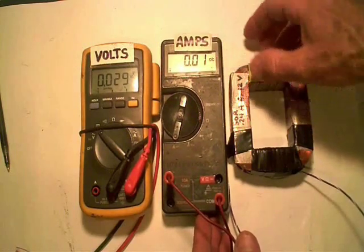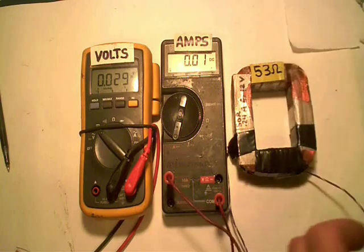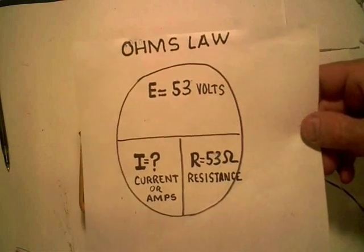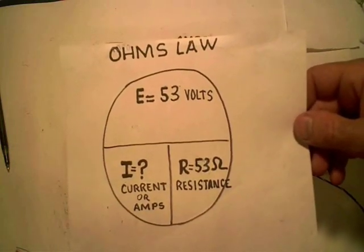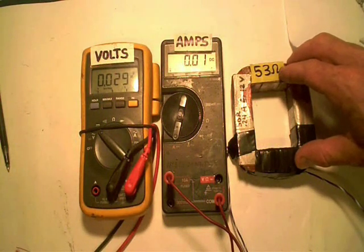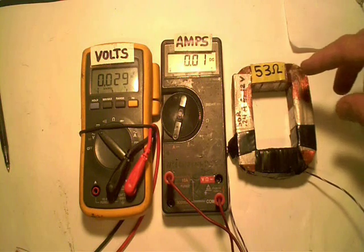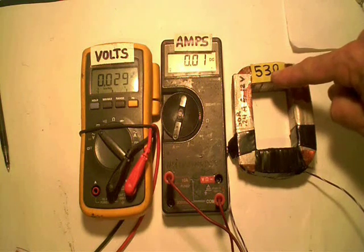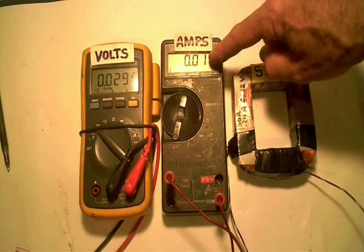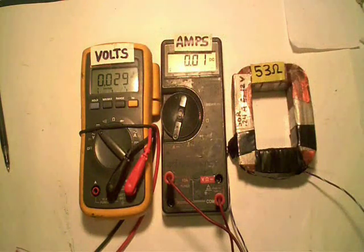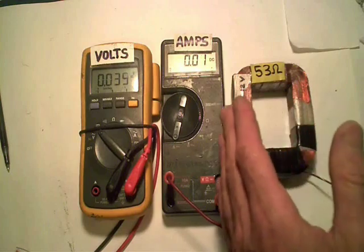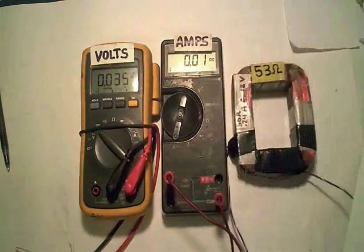Before I get into showing what inductive reactance is, I'm going to cover some of the fundamentals of Ohm's law. I'm sure most of my viewers are quite familiar with Ohm's law, but basically it shows a relationship between voltage, current, and resistance — in this case, direct current through a coil of wire, also known as an inductor, versus alternating current. What I've got here is a coil that's got 53 ohms of resistance in it, and I've got it hooked up in series with an amp meter and a volt meter.